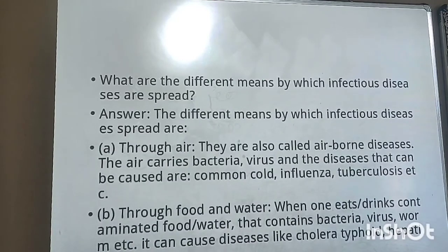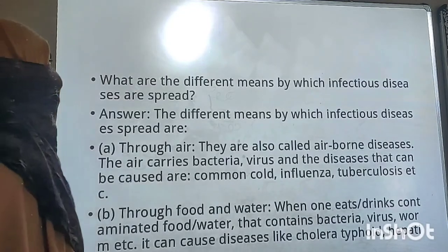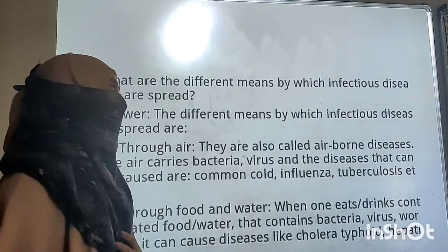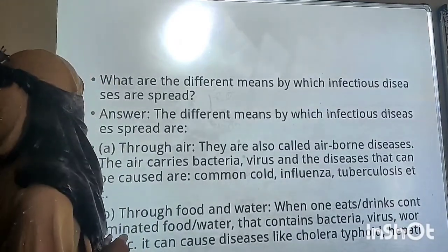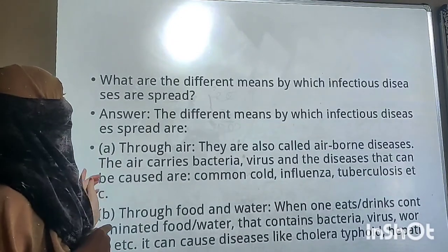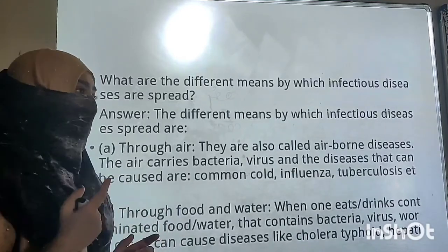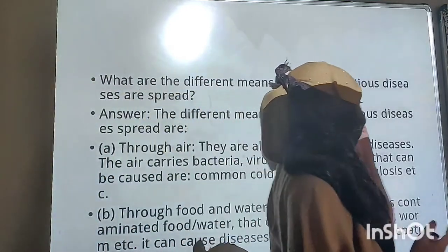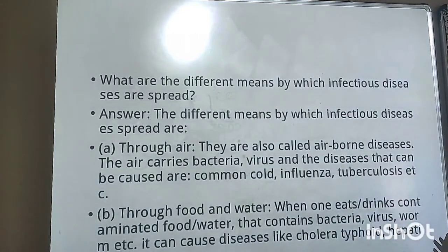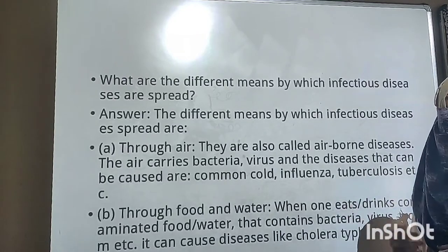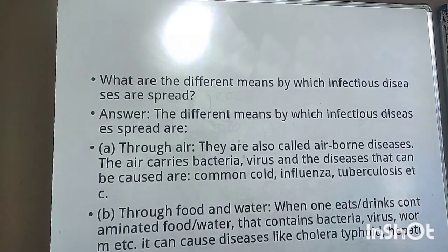First we will understand the question — what are they exactly asking? And then we will try to answer it. The question is: what are the different ways by which infectious diseases are spread? You have to mention all the ways that infectious diseases spread, explaining each and every one in detail.